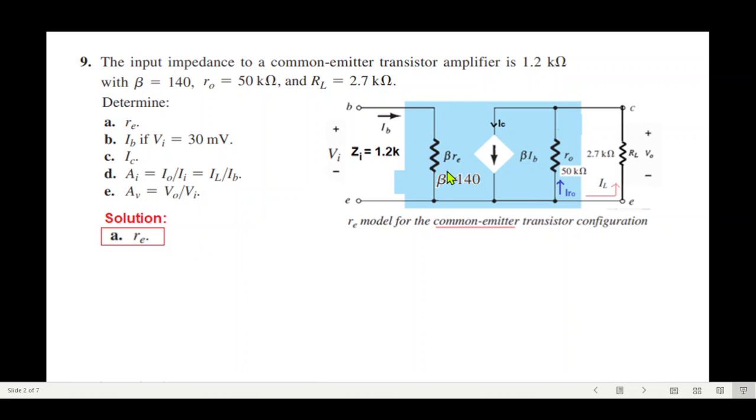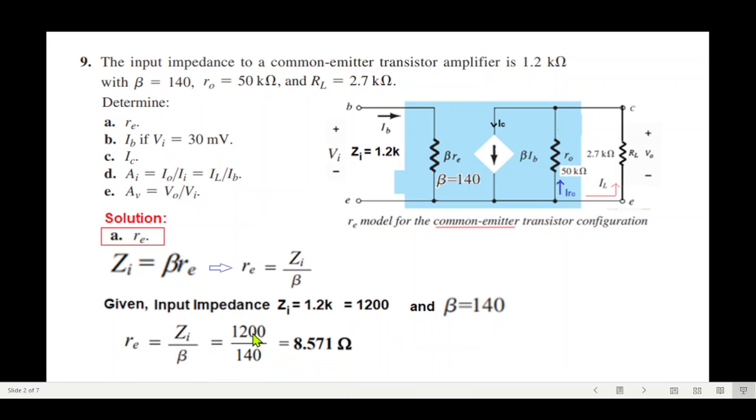First is re. If we know beta times re, then we can find re. Beta times re is equal to zi, so we can write zi equals beta times re. From here, re is zi over beta. Just plug in the values: zi is 1.2 kilo, beta is 140, so 1200 divided by 140 is 8.51 ohm. This is re.